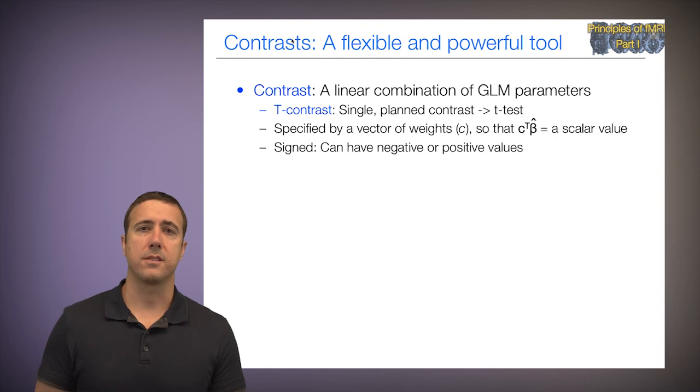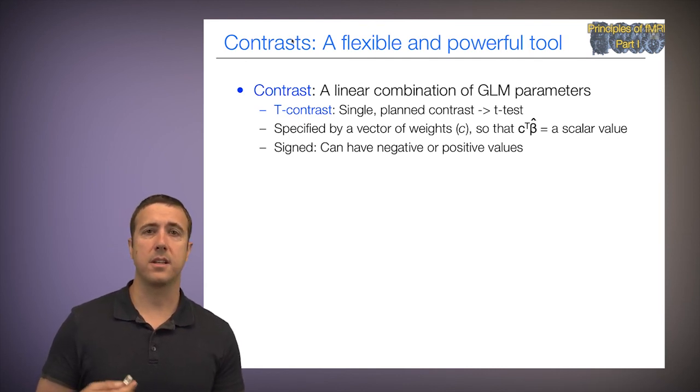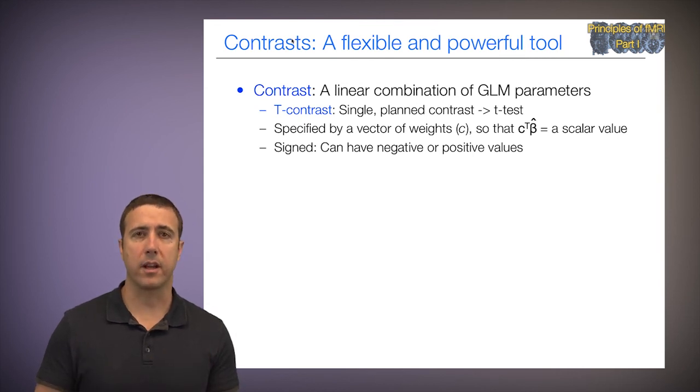So what is a contrast? It's a flexible and powerful tool for testing a priori hypotheses in a GLM framework. We'll focus now specifically on T contrasts, which is a linear combination of GLM parameters that gives us a single planned contrast. It's specified by a vector of weights, which we'll call C, so that C transpose times beta hat gives me a scalar value. This is signed. It can have negative or positive values under the null hypothesis.